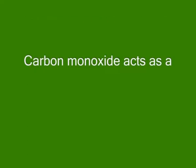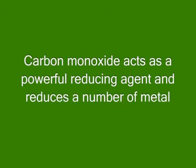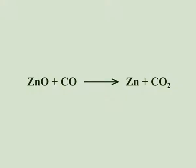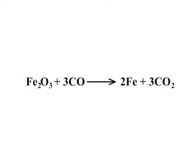Carbon monoxide burns in oxygen or air with a blue flame to form carbon dioxide. There is no change in color of litmus paper as carbon monoxide is neutral. Carbon monoxide acts as a powerful reducing agent and reduces a number of metal oxides upon heating. Zinc oxide reacts with carbon monoxide to form zinc and carbon dioxide. Copper oxide reacts with carbon monoxide to form copper and carbon dioxide. Ferrous oxide reacts with carbon monoxide to form iron and carbon dioxide.